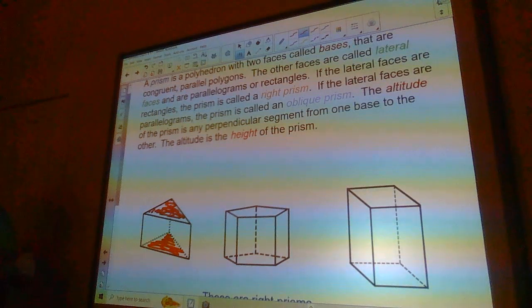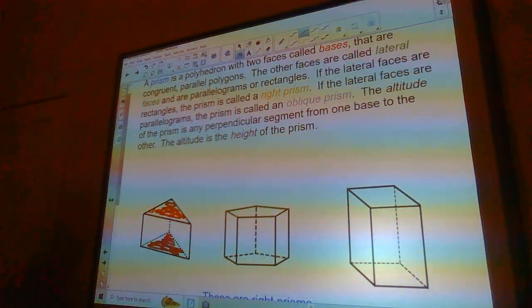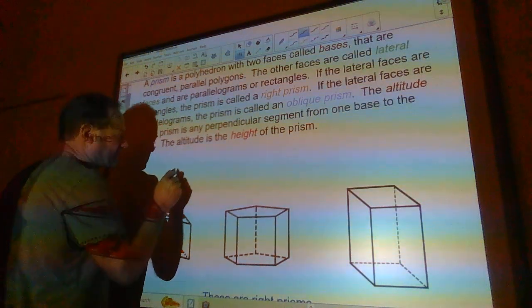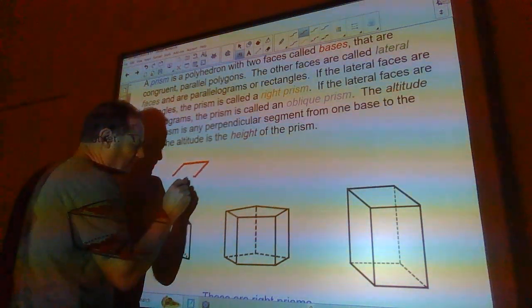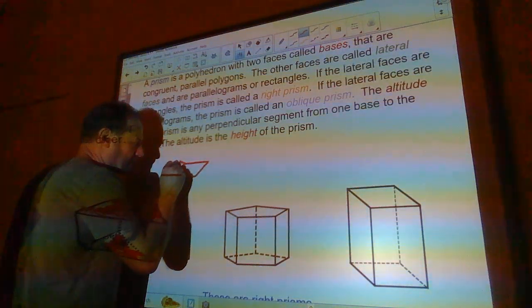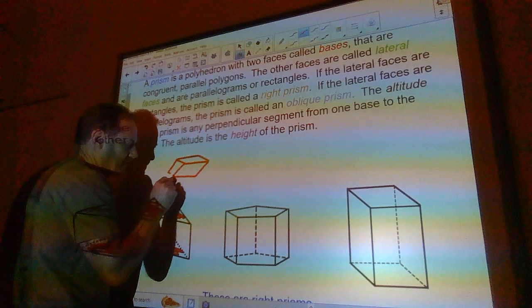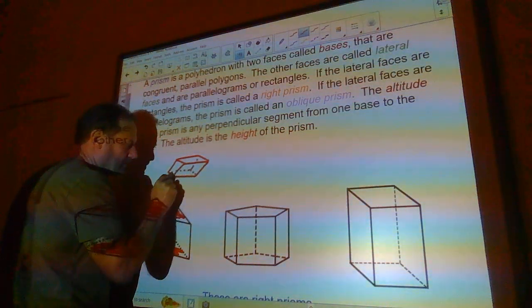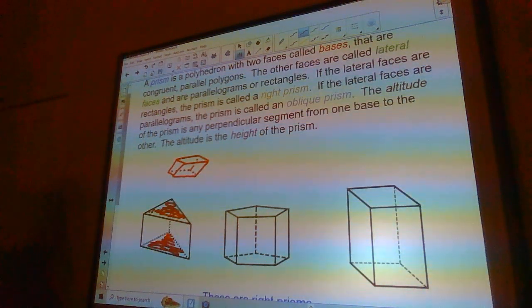If the lateral faces are rectangles, like in all of these, then that's called a right prism. If the lateral faces are parallelograms, a prism is called an oblique prism. So an oblique prism would look something like this, where the front face here is a parallelogram, that's an oblique prism.